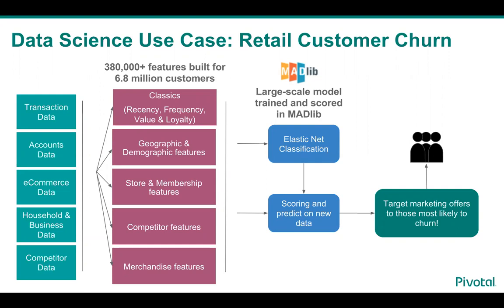The ElasticNet prediction function is then used to score the model on all customers. Quite often, no matter what the size of the training set, the data sets that need to be scored are larger and also need to be scored on an ongoing basis, and Madlib makes this relatively seamless.